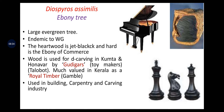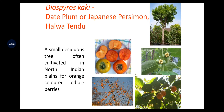Diospyros assimilis is the ebony tree — a large evergreen tree endemic to the Western Ghats. Heartwood is jet black and hard, the ebony of commerce. Wood is used for decorative carving, building, carpentry and carving industry. Diospyros kaki (date plum or Japanese persimmon, also called halwa tendu) is a small deciduous tree often cultivated in the North Indian plains for its orange-colored edible berries.